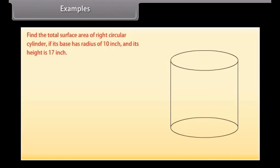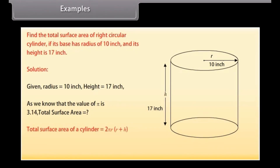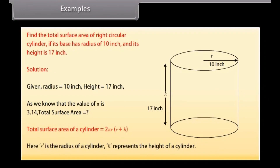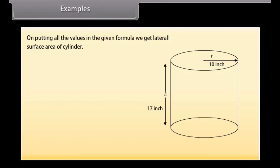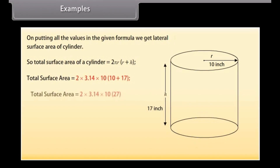Example: Find the total surface area of a right circular cylinder if its base has a radius of 10 inches and its height is 17 inches. Solution: Radius = 10 inches, height = 17 inches, and π = 3.14. Total surface area of a cylinder = 2πr(r + h) = 2 × 3.14 × 10 × (10 + 17). Solving this, we get the total surface area as 1695.6 square inches.